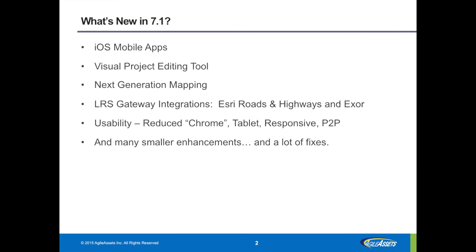Another new capability, and this really comes back to one of the themes we've had for the product, is usability. We've introduced what we call the visual project editing tool. This gives you the ability to graphically view pavement projects and optimize them in a very interactive visual way — you can actually drag and drop things across years, across lanes, consolidate projects, merge projects, and really use the visual sense of what's presented rather than just looking at it in a grid or tabular format.